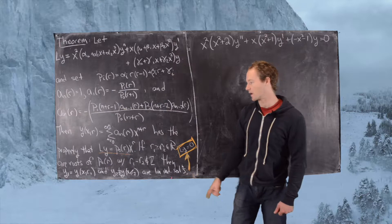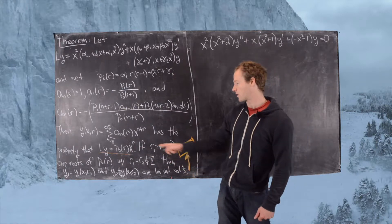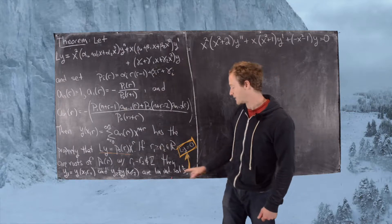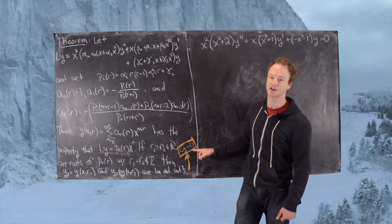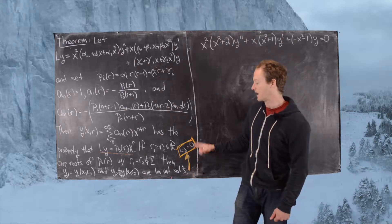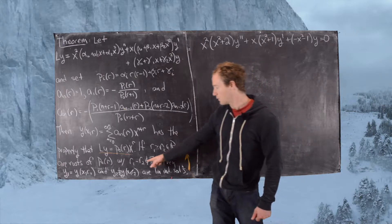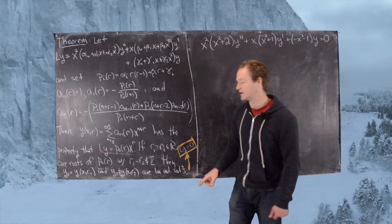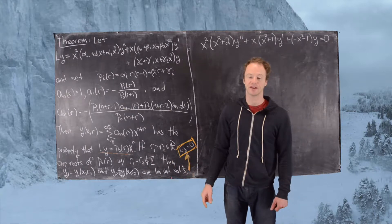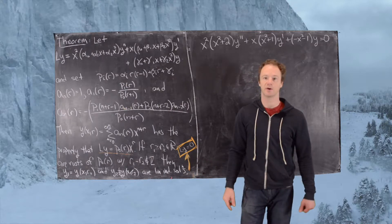This leads us to see that if R1 and R2 are roots of this polynomial P0, then we get solutions to the differential equation defined by the operator L0y=0. Furthermore, if they're real solutions with R1 minus R2 not an integer, we actually get linearly independent solutions — in other words, a fundamental set of solutions to this differential equation.